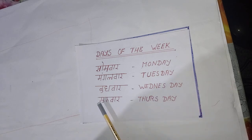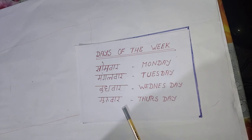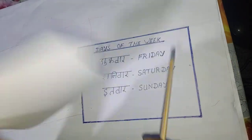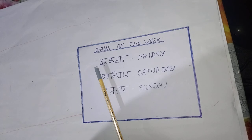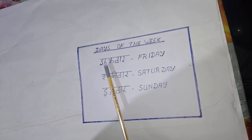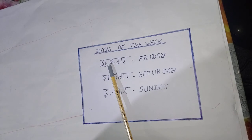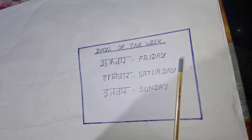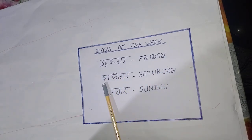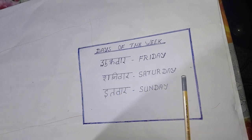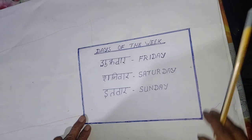Guru war: ga, guru, war — guru war, Thursday. Shukra war: shu, ik, ra — the ka and ra join together, so it is ikra — shukra war, Friday. Shani war: sha, ni, va, ra — shani war, Saturday. Eath war, Sunday. So these are all the names of the seven days of the week.